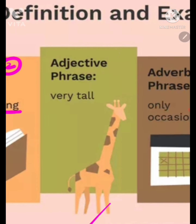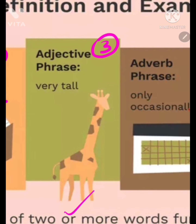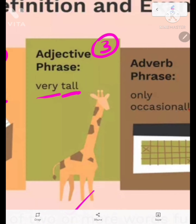Next is the adjective phrase. 'Tall' is an adjective, and when you add a stronger adjective to it — like 'very tall' — that gives you an adjective phrase.